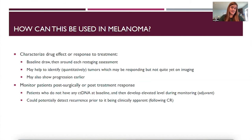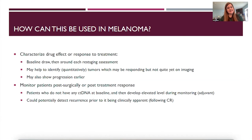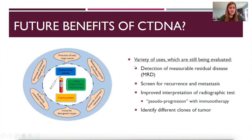We could also potentially detect recurrence following complete response. For patients who have a complete response to either targeted or immunotherapy, and we stop treatment and monitor with scans, we could also do ctDNA alongside that to look a little more closely. Key applications include detection of minimal residual disease, screening for recurrence and metastasis, helping to interpret pseudoprogression especially with immunotherapy, and identifying different clones of tumors — all of which are being used in other solid tumors as well.